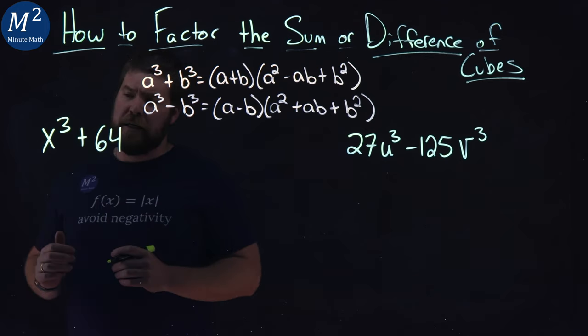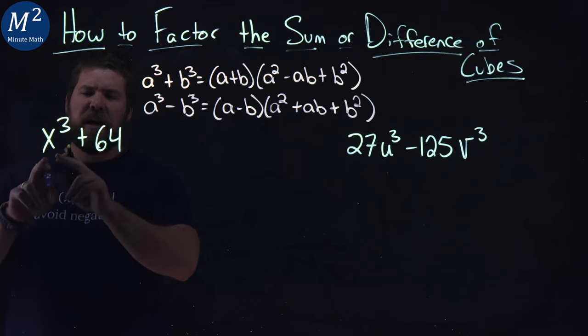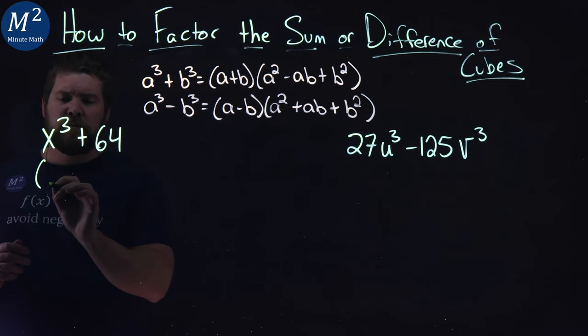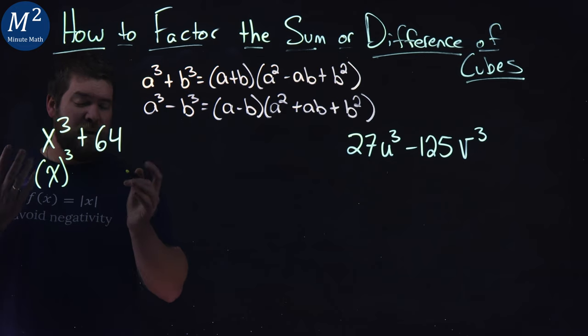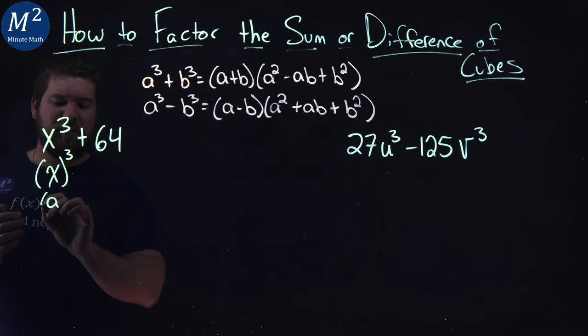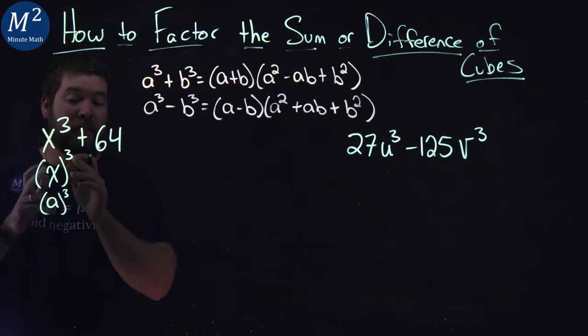Now the first part here is going to be pretty simple actually. Look at x cubed. Well x cubed I write it like this x all to the third power and we can see that's an a to the third power right here our value would be x.